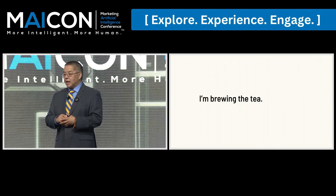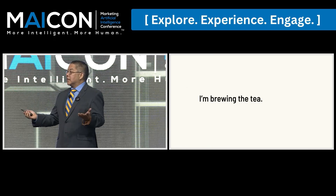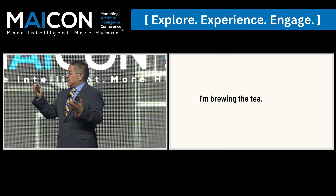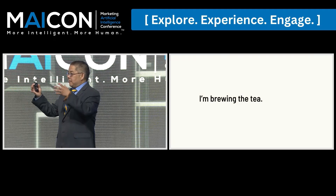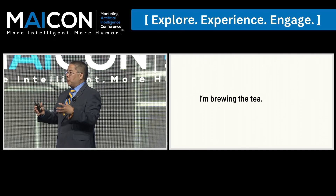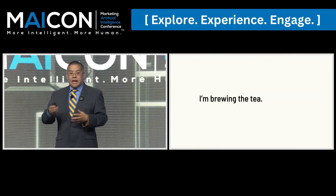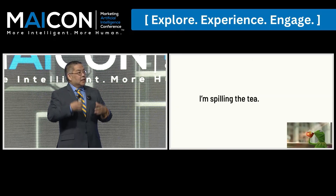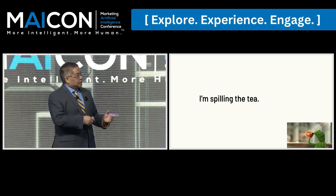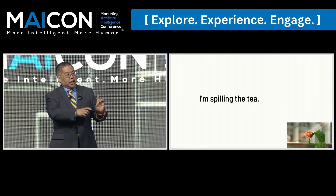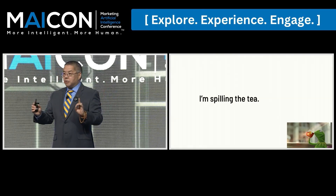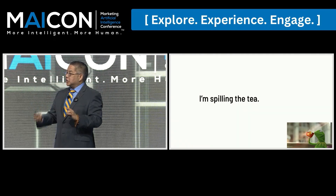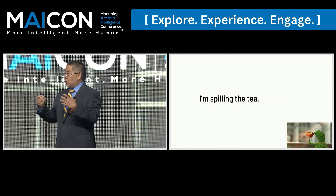If I say, 'I'm brewing the tea,' for most English speakers, it's pretty apparent that I'm talking about a beverage made of hot water and a dried leaf. Now, if I say, 'I'm spilling the tea,' this is different. One word changes the meaning of another word. There are statistical distributions in how words work. We all know this from the language that we use.